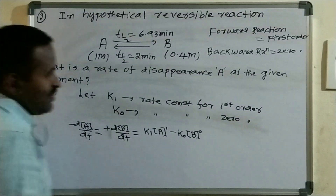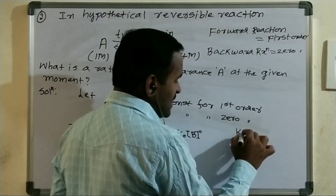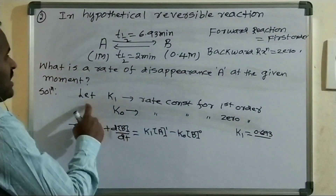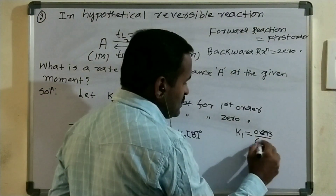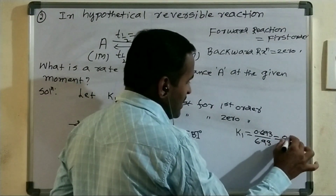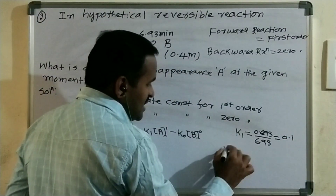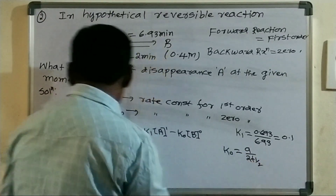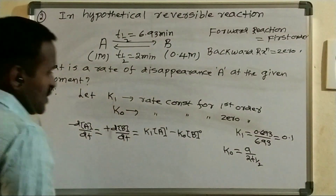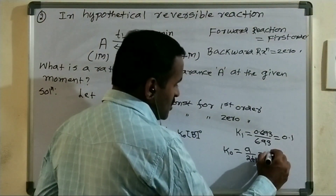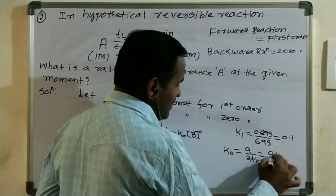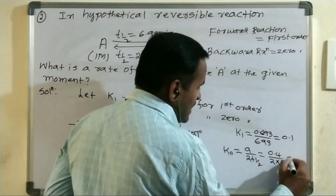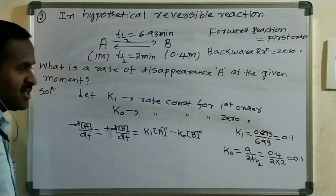K1 = 0.693 / 6.93 = 0.1. And K0 = [A] / (2 × t_half) = 0.4 / (2 × 2) = 0.1. So both K1 and K0 equal 0.1.